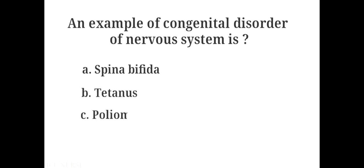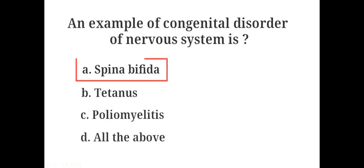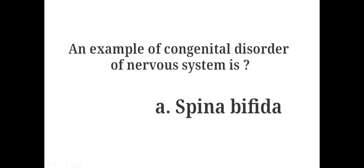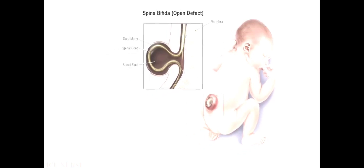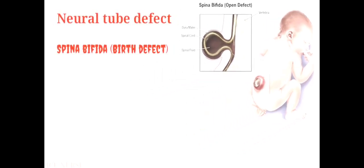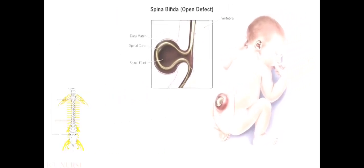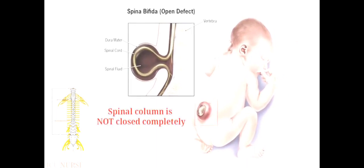An example of congenital disorder of the nervous system is: A. Spina bifida, B. Tetanus, C. Poliomyelitis, D. All the above. The answer is A. Spina bifida. Spina bifida is a neural tube defect, a type of birth defect of the brain, spine or spinal cord. It happens if the spinal column of the fetus does not close completely during the first month of pregnancy, which can damage the nerves and spinal cord.